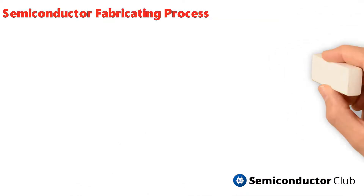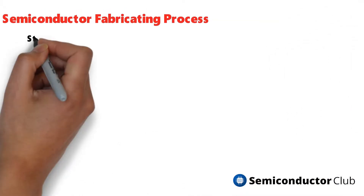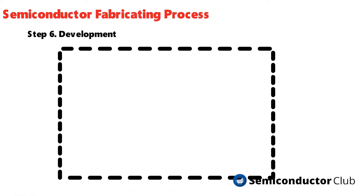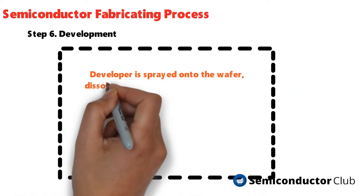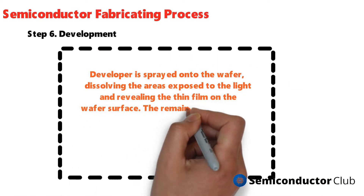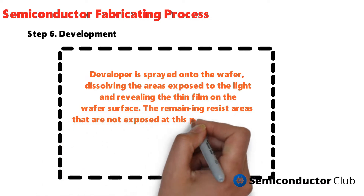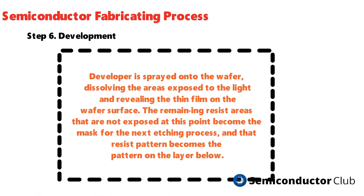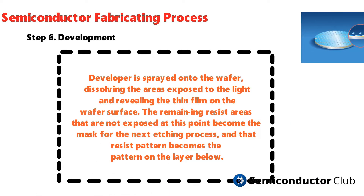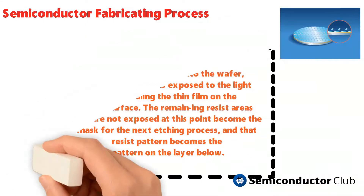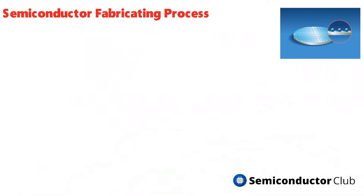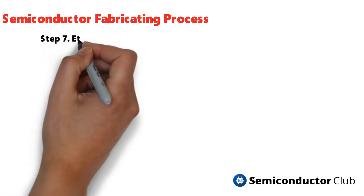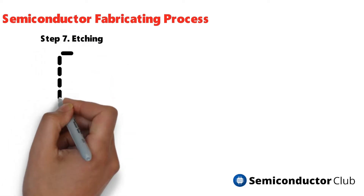Development: developer is sprayed onto the wafer, dissolving the areas exposed to the light and revealing the thin film on the wafer surface. The remaining resist areas that were not exposed become the mask for the next etching process, and that resist pattern becomes the pattern on the layer below.